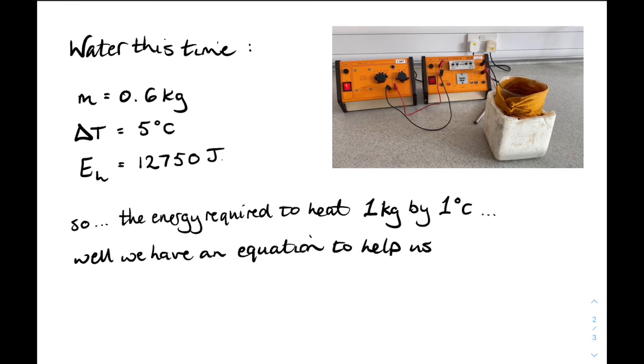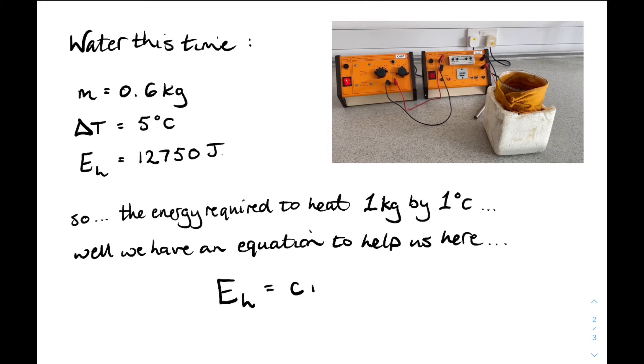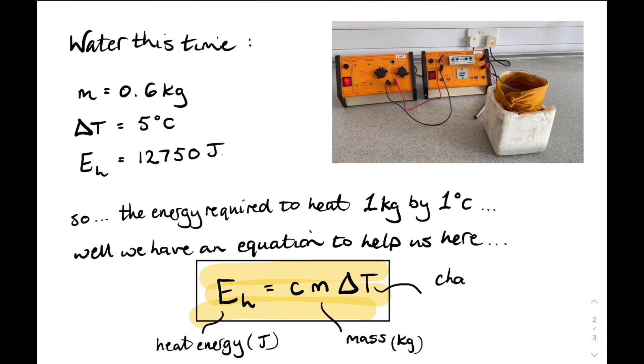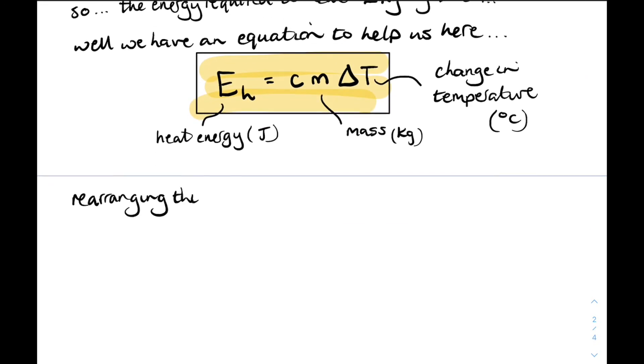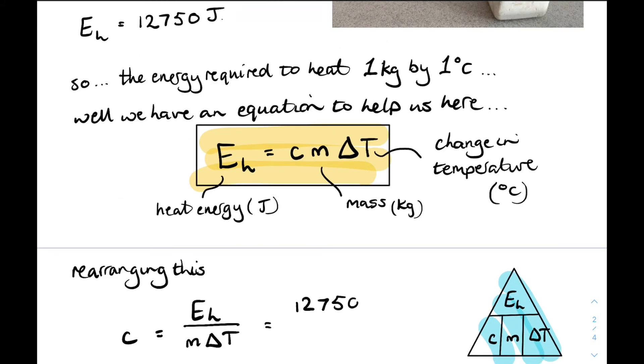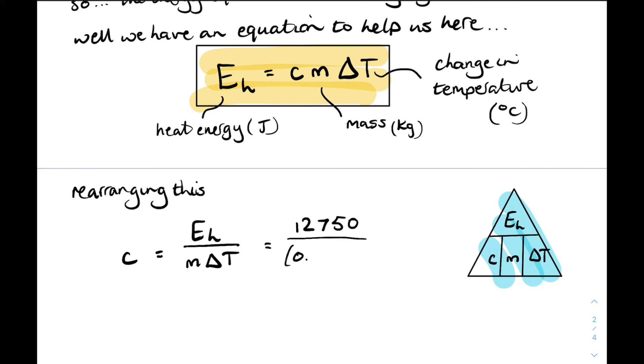Well, we've got an equation to help us here. And it's on your relationship sheet. EH equals cm delta T. EH is the heat energy. M is the mass in kilograms. And delta T is that change in temperature. We can rearrange this then for us to find c, the specific heat capacity for water. Now you can put this in a triangle. It's a bit clumsy, but that's what it looks like. So c is EH over m delta T. Let's put all those figures in. 12,750, 0.6 kilograms and 5 degrees. That gives us 4250 joules per kilogram per degree C.